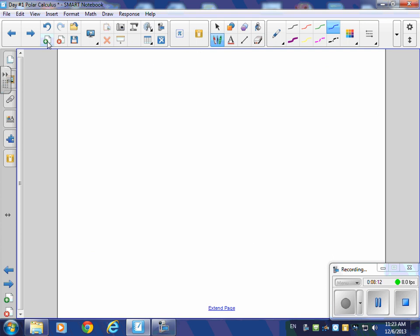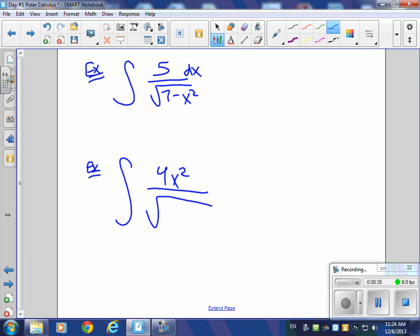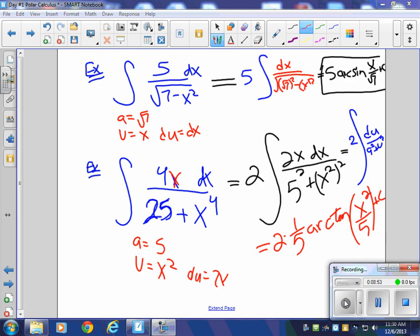So I'm going to give you two practice ones that you can do at home. Example, antiderivative of 5 over the square root of 7 minus x squared dx, that's a good one, and then I'm going to give you this guy, 4x squared over the square root of 25 plus x to the 4. Give those a try.